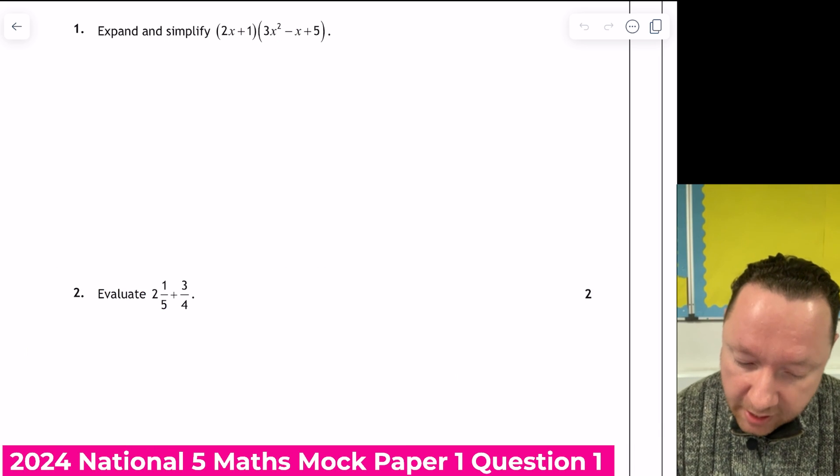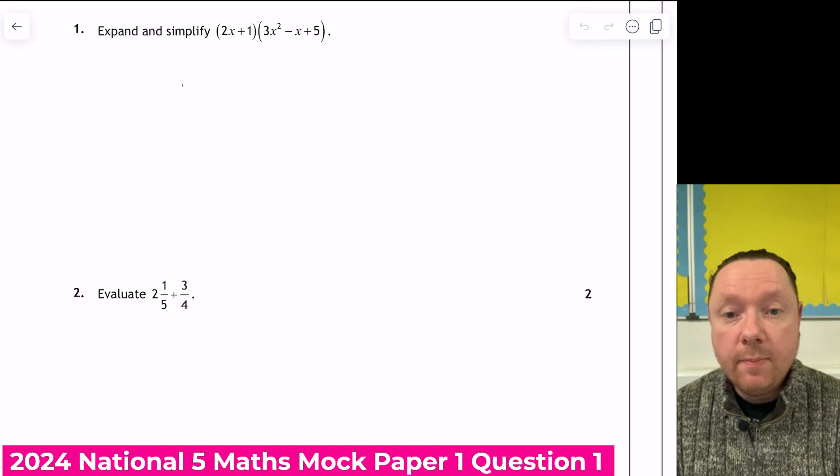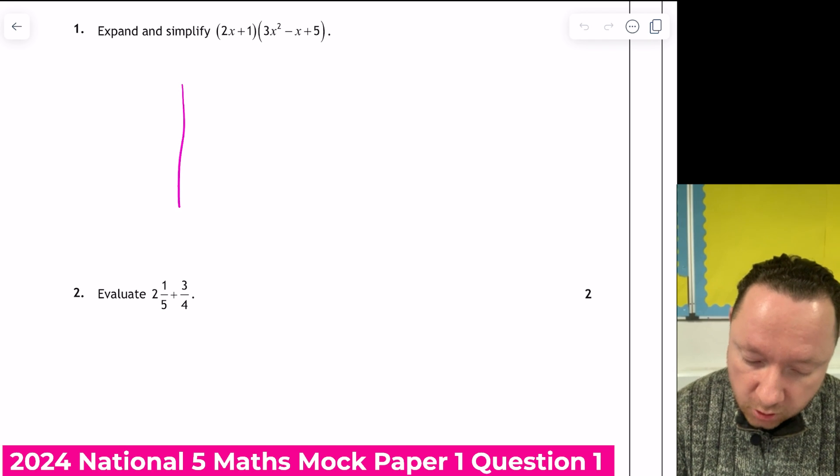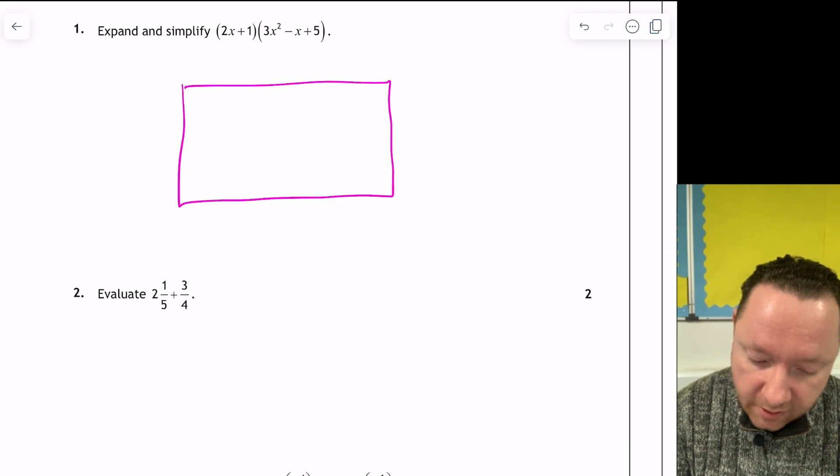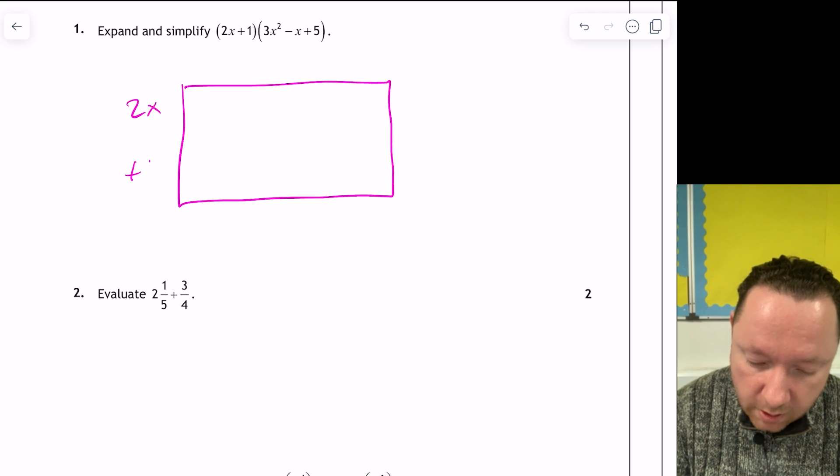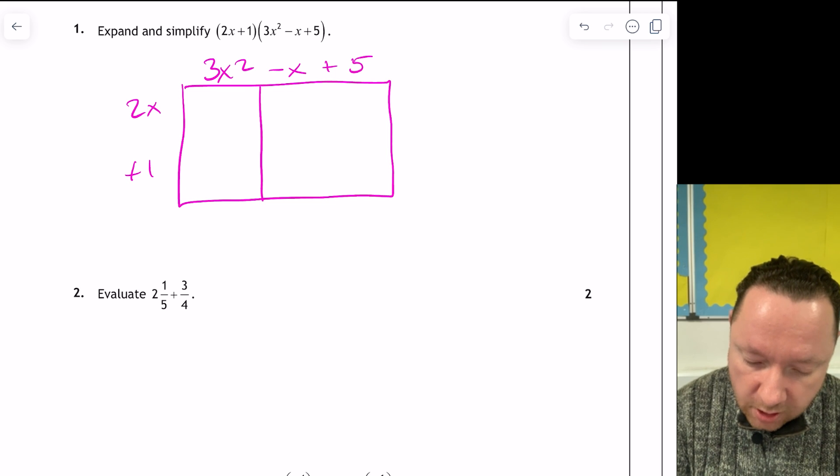Question 1. Expand and simplify 2x plus 1, 3x squared minus x plus 5. So I always use a box for this. You may use another method, but I've got 2x plus 1, 3x squared minus x plus 5, and I split my box up.